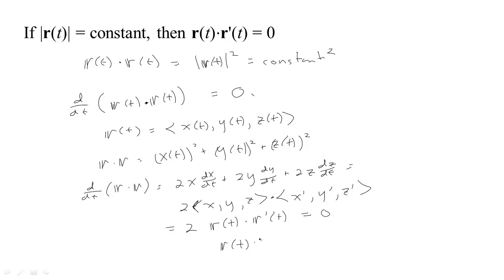So if you divide both sides by 2, you get that r dotted with r' is 0. In other words, if a function's length does not change, if the length of a vector does not change, then it is going to be orthogonal to its derivative.